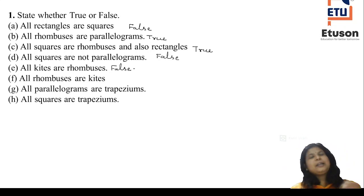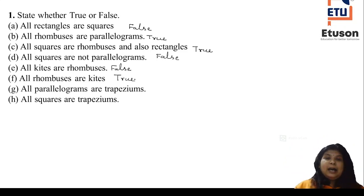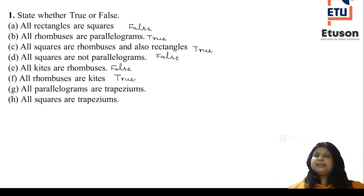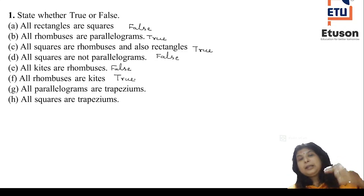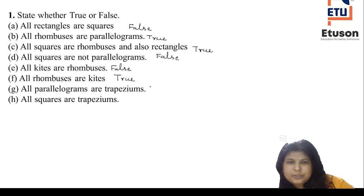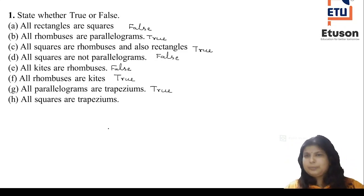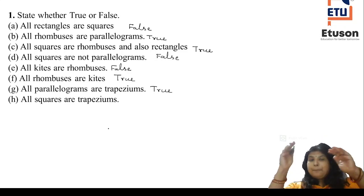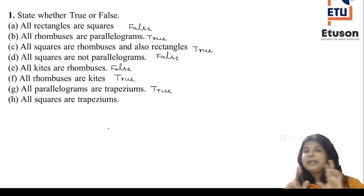All rhombuses are kites — this you can take as true, because in a rhombus all sides are equal, so adjacent sides are also equal. Now, all parallelograms are trapezeums. In a trapezeum, the condition is that two sides must be parallel; if other sides are also parallel, that is fine. So a parallelogram satisfies the trapezeum condition, and therefore all parallelograms are trapezeums — true. If it had been 'all trapezeums are parallelograms,' that would be false, since a trapezeum doesn't guarantee both pairs of sides are parallel.